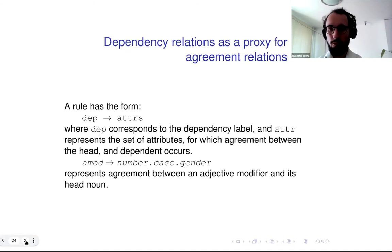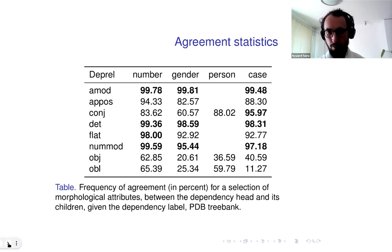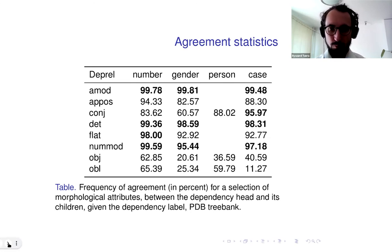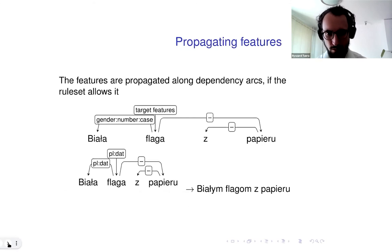We have induced the rules automatically from the biggest dependency treebank for Polish, PDB. The method was to calculate the frequency of agreement between the head and the child given a particular dependency label, for each morphological feature. If the frequency for a certain feature meets a threshold of 95%, we interpret it as reflecting a syntactic factor as opposed to pure chance or semantic factors, and so a rule is added requiring that agreement occurs for that feature given that particular dependency label.